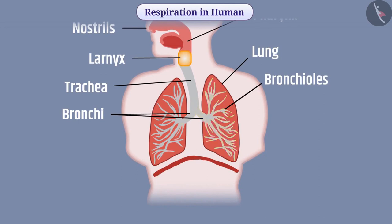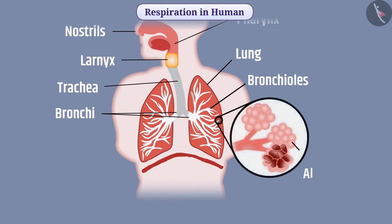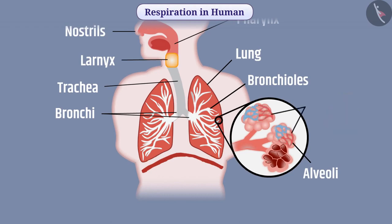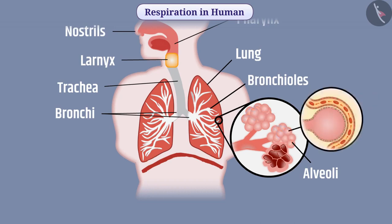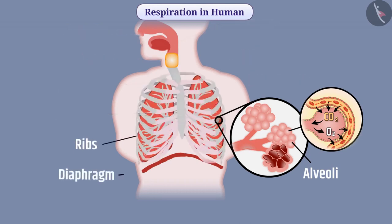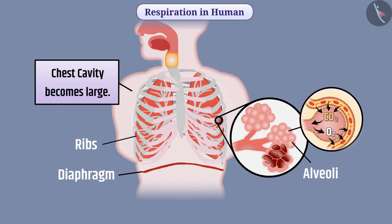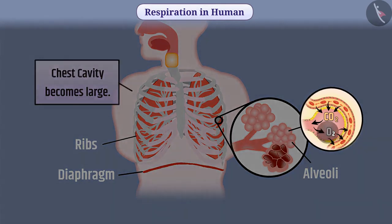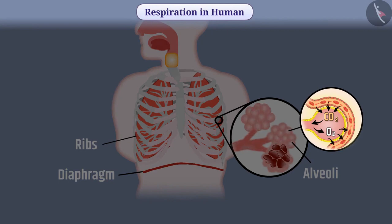Air from the trachea flows into the lungs via the bronchi and bronchioles. In the lungs, bronchioles terminate into alveoli. Alveoli are like a bunch of grapes, and in the wall of alveoli there is a network of blood vessels. The surface of alveoli is thin, due to which oxygen is taken from the surface of alveoli into the blood, and carbon dioxide present in the blood is released into the alveoli. While inhaling, the diaphragm becomes flattened, causing the ribs to lift up and the chest cavity to become large, so air flows into the lungs and alveoli fill with air. Oxygen present in the air of alveoli then passes into the blood of the alveolar blood vessels.